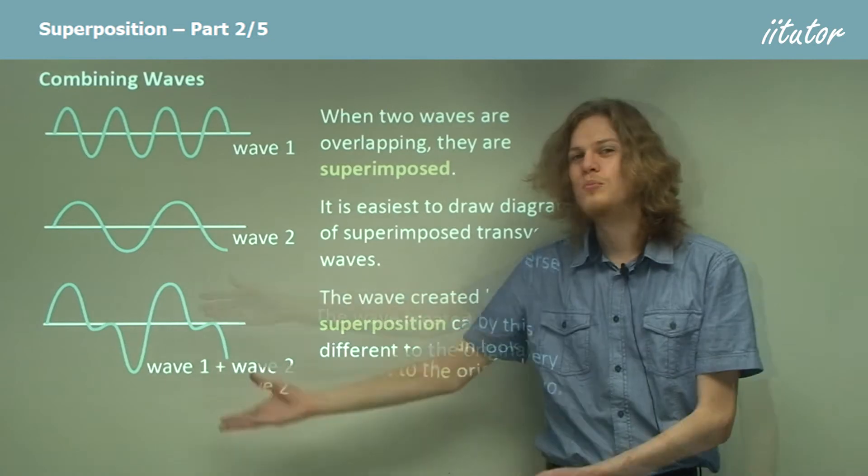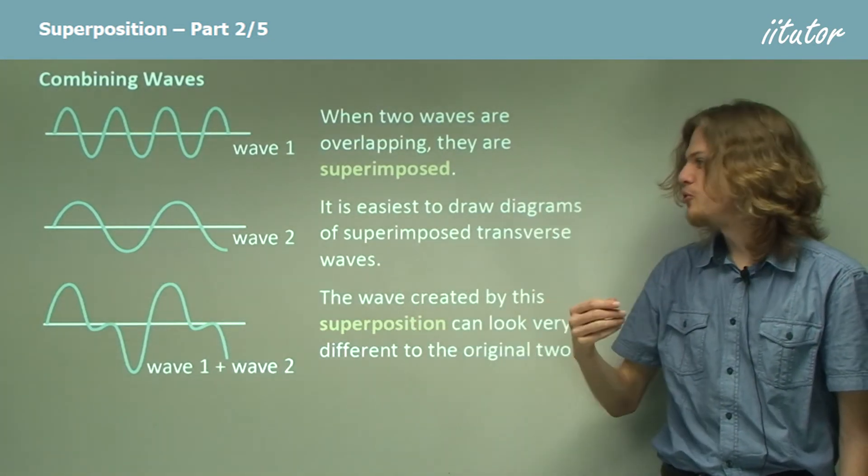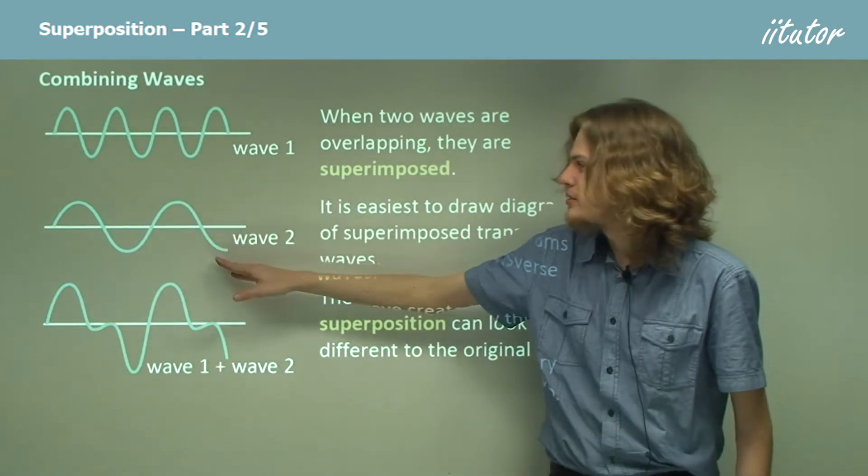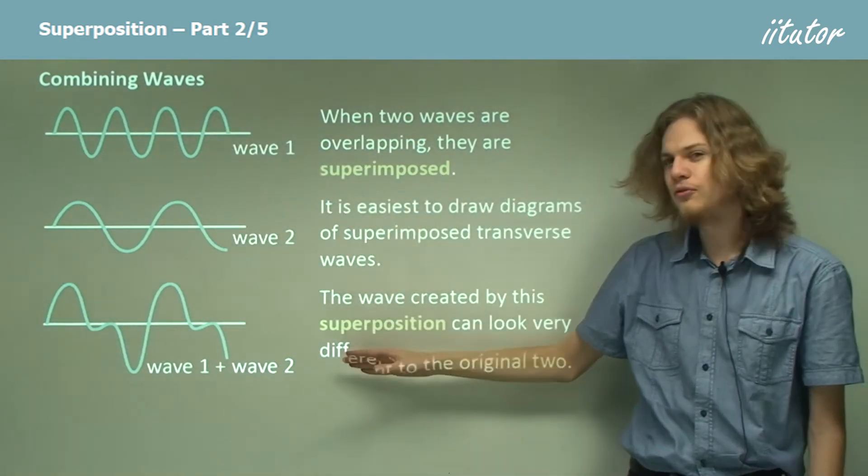will start off moving above the x-axis. When things start to differ between the two waves—like when this wave is low down and this wave is high up—then it means that the sum of the waves will be close to zero.